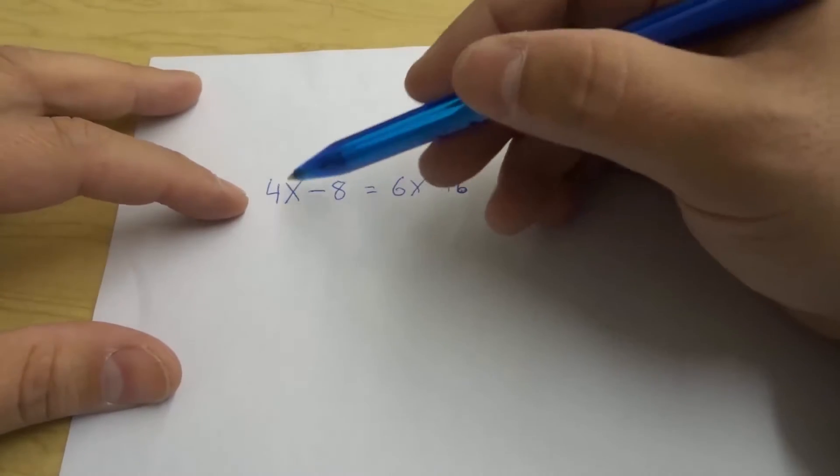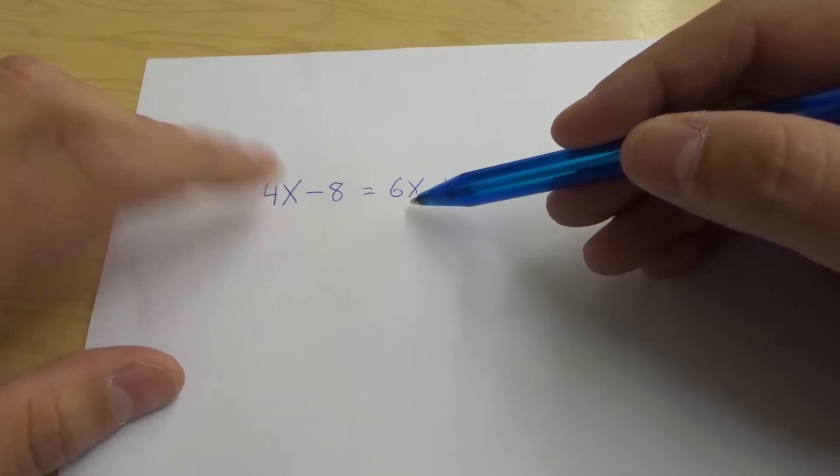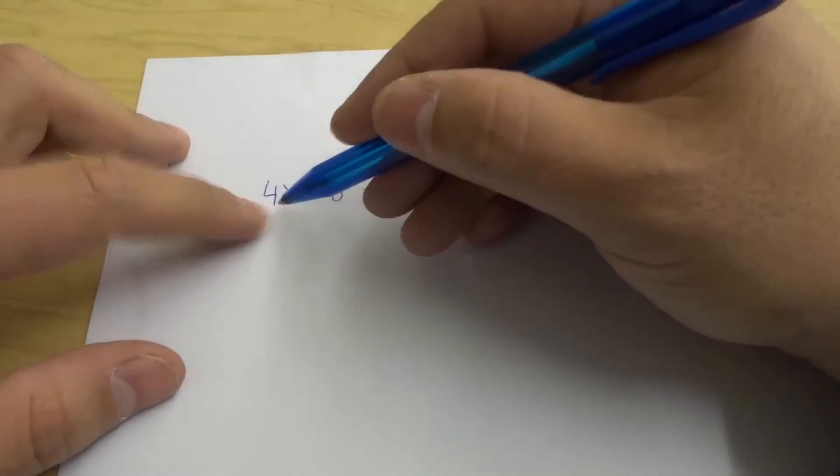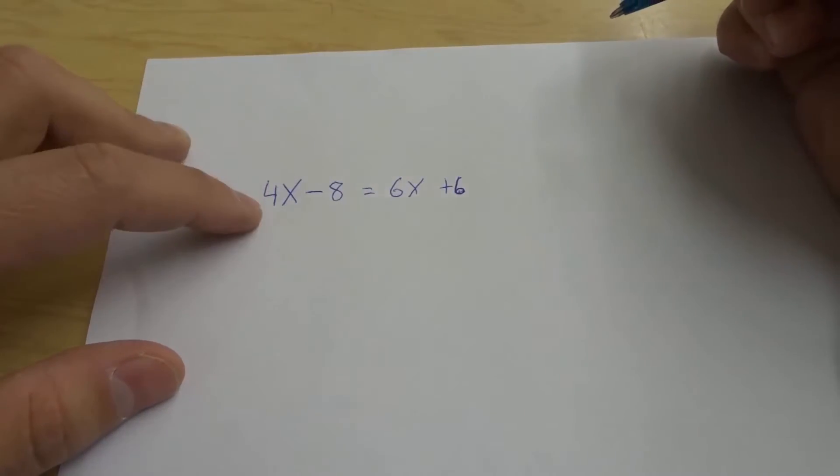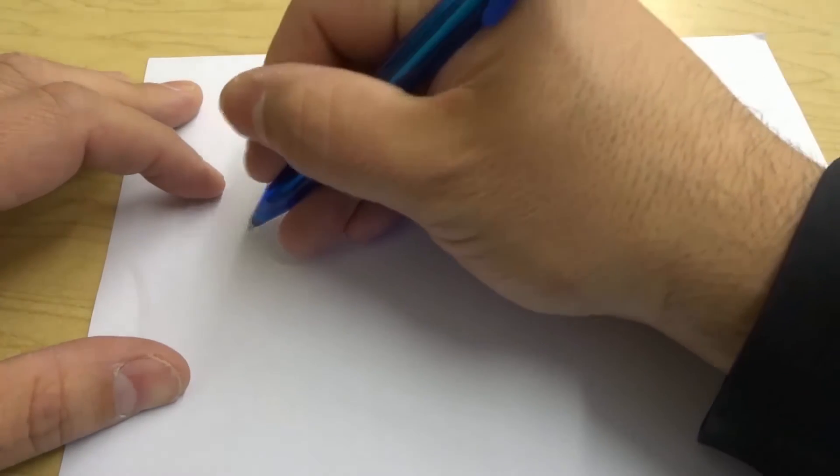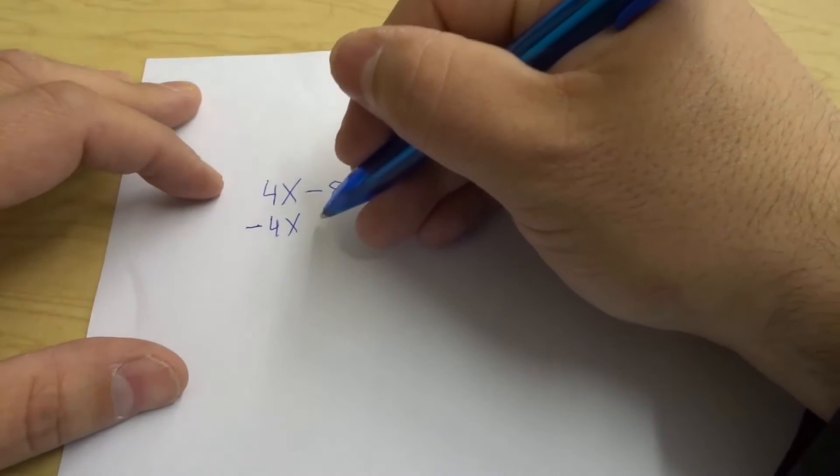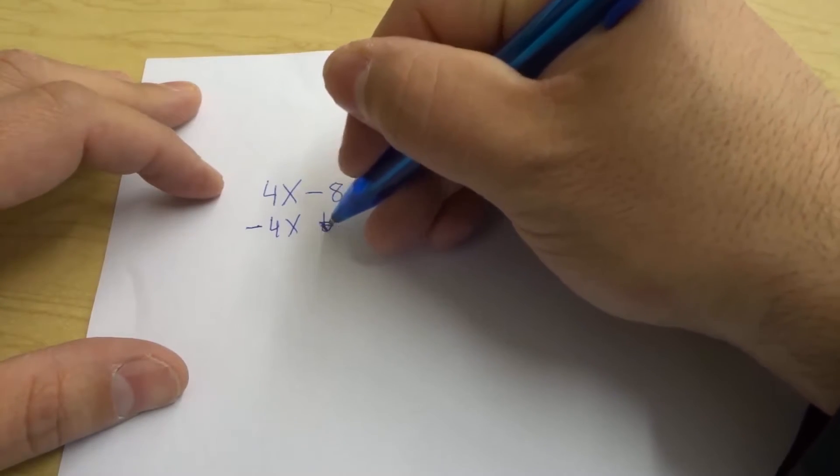So we need to use inverse operations and the smaller variable when you're comparing 4x to 6x is 4x. So we want to get rid of the 4x and in order to get rid of the 4x we need to subtract 4x. So we do inverse operations. We do minus 4x and then this actually gets brought down.